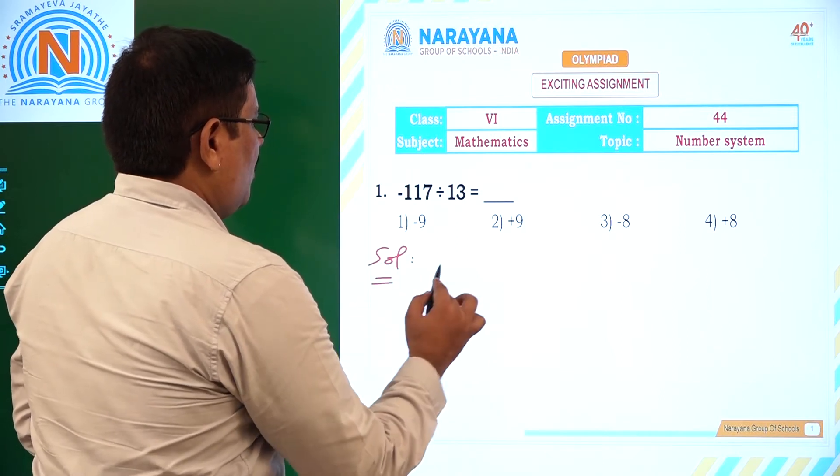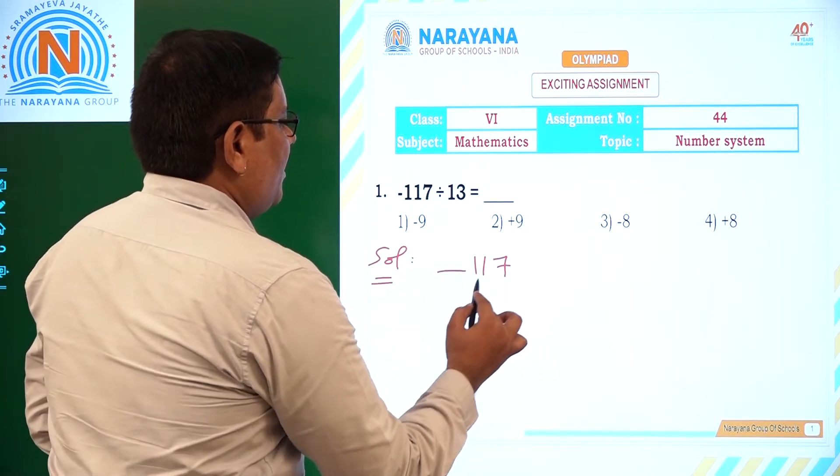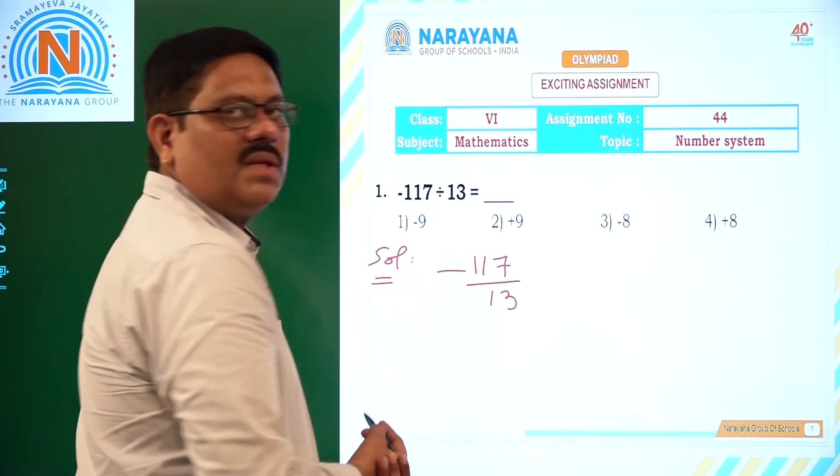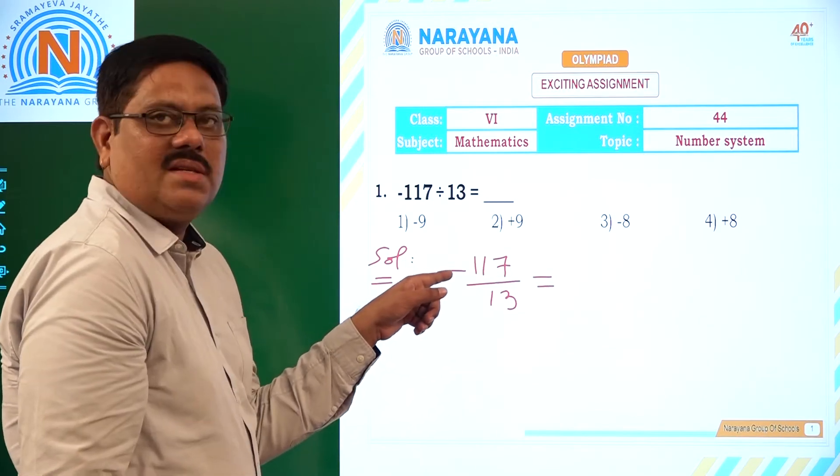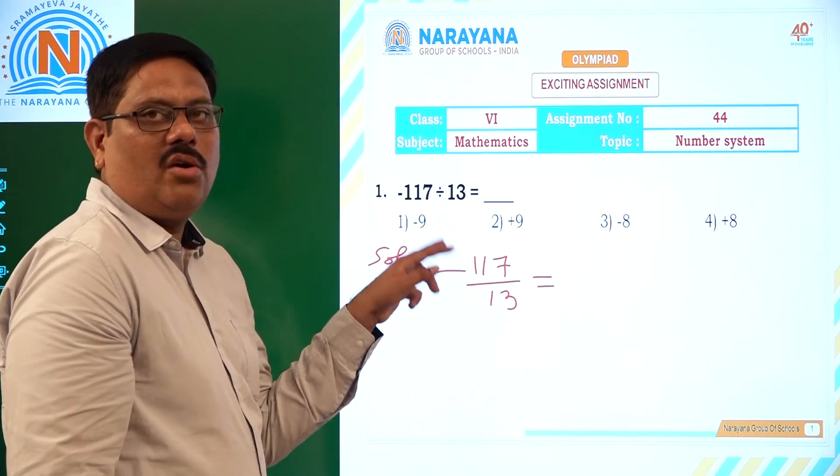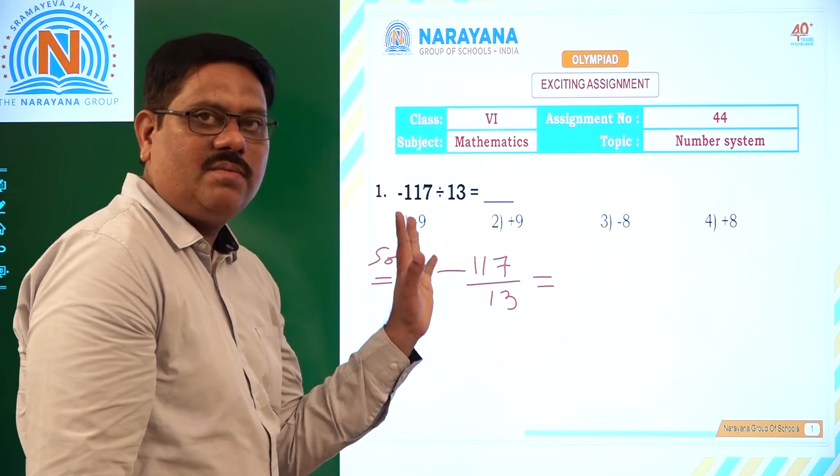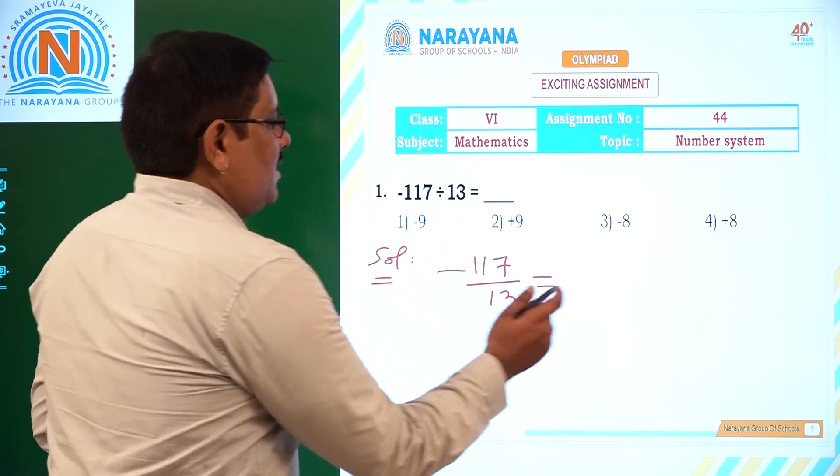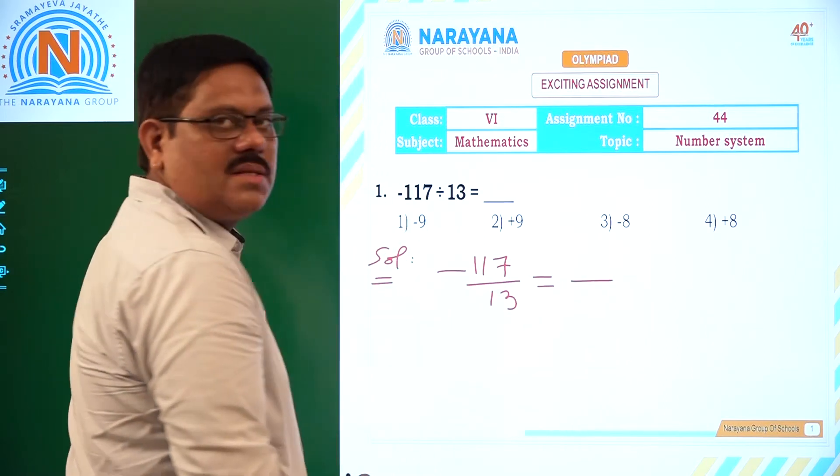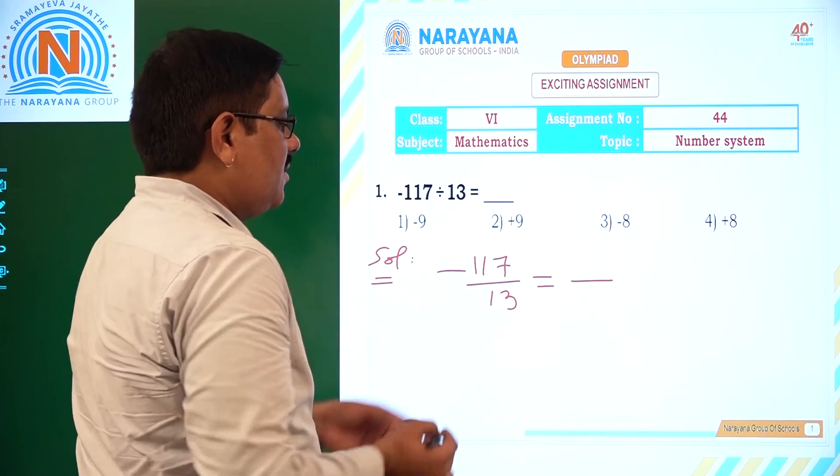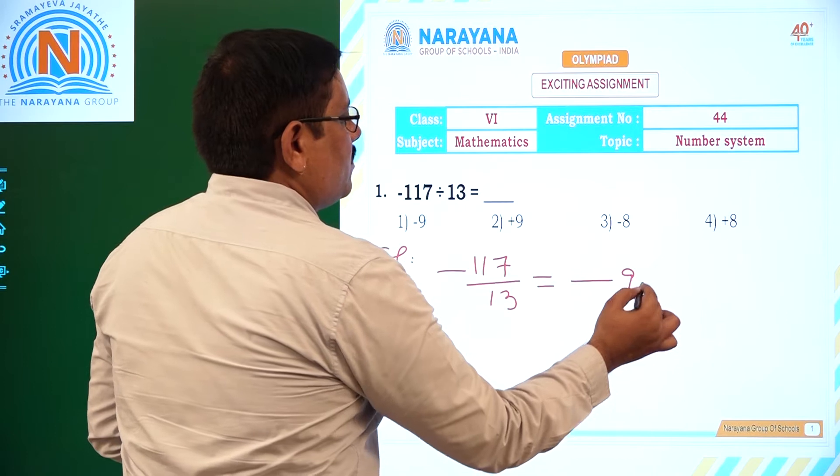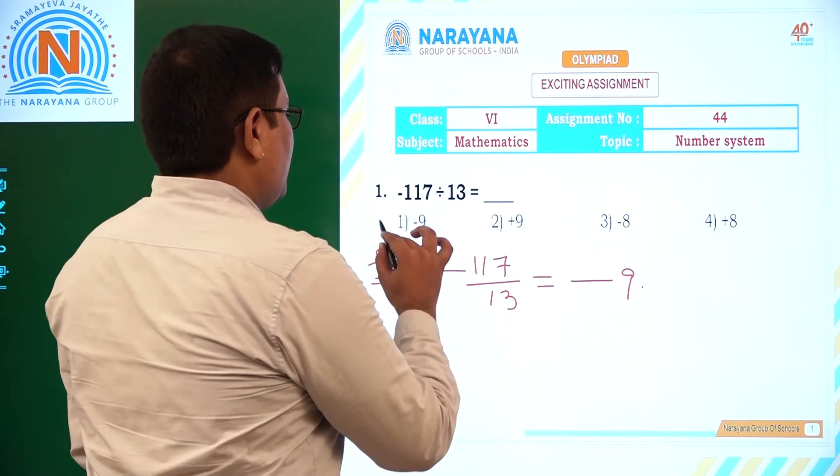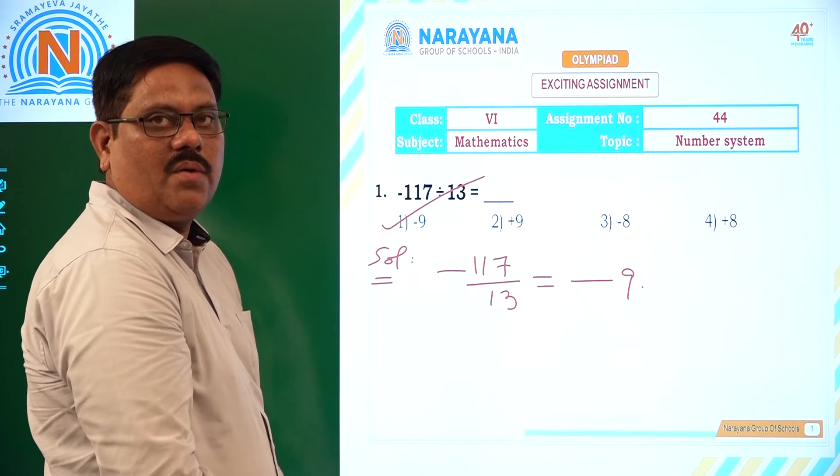Minus 117 divided by 13. Here what we have to observe is when minus is there either for numerator or denominator, it applies to the whole fraction. It remains the same: minus 117 by 13. So how to divide 117 by 13? That is nothing but 9 times. So the answer will be minus 9, which is the first option.